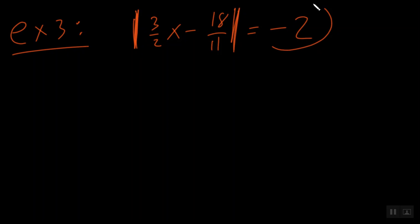So, example number three, non-solution, super easy. Let's say we have absolute value bar of 3 over 2x minus 18 over 11, close absolute value bars. That looks pretty gross, right? But, if I set this equal to negative 2, what's the answer? Well, remember, y'all, absolute value bars can never produce a negative. And so, you would say, hey, this is no solution. Easy, easy, easy.